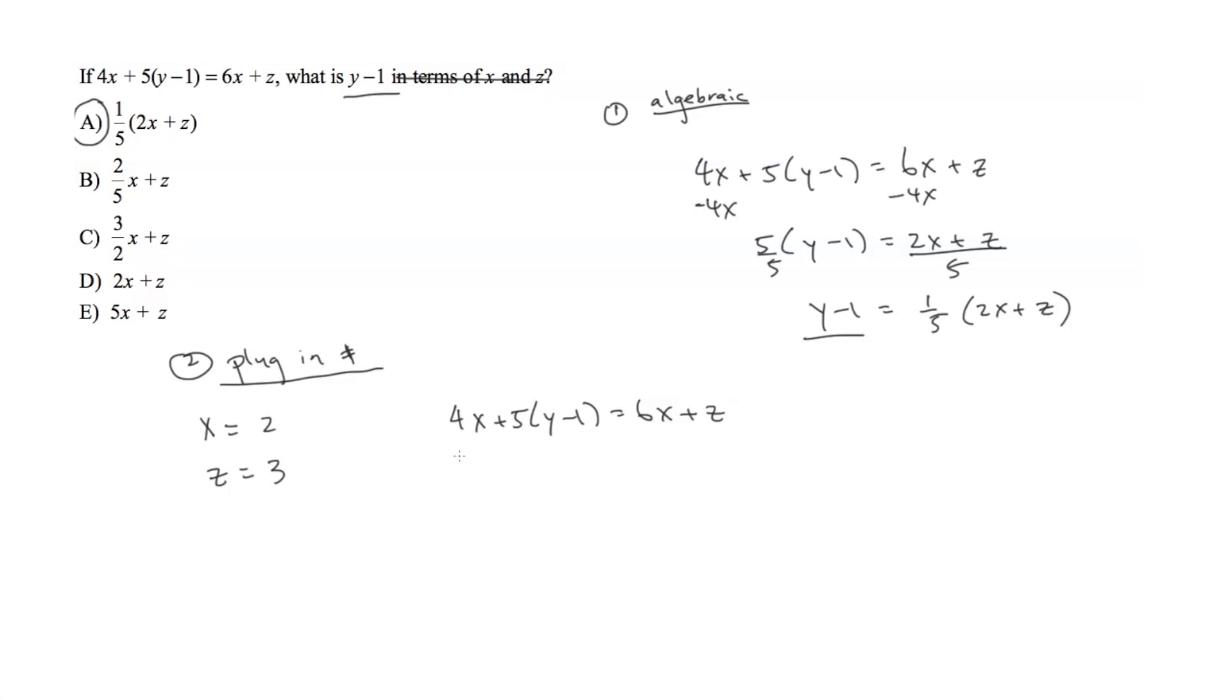And I'm simply going to plug in those values into the given equation and solve for y minus 1. So we have x is equal to 2, and again I'm going to leave y minus 1 untouched, is equal to 6 times 2 plus z, which is equal to 3. So I'm just going to solve this out like a normal equation. So we get 12 plus 3, in this case 15. So we get 15 minus 8, which is equal to 7. And then we would divide 5 on both sides, and we get y minus 1 is equal to 7 over 5.